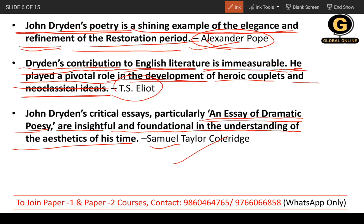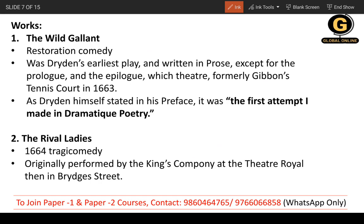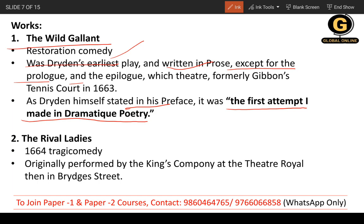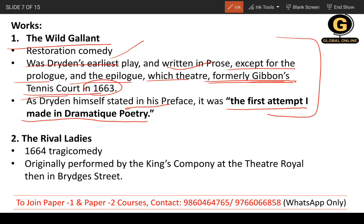The first work is 'The Wild Gallant,' a Restoration comedy. Dryden stated in his preface that it was 'the first attempt I made in dramatic poetry.' It was his earliest play, written in prose except for the prologue and epilogue, and it was performed at Gibbon's Tennis Court in 1663.